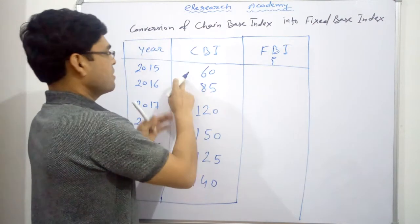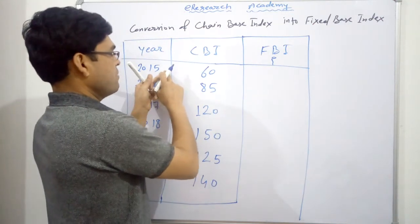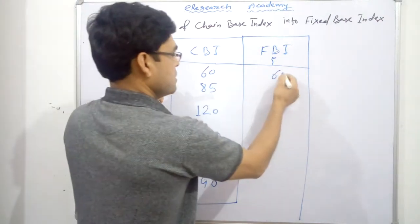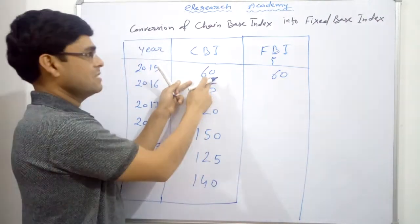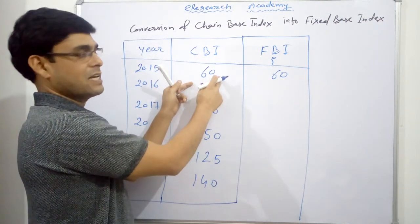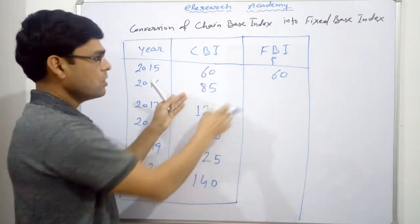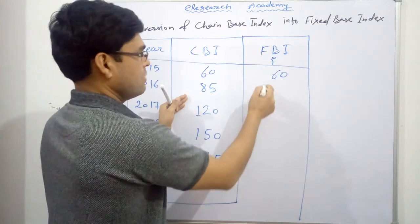So what we do for the base here, from where we are starting this problem or this solution, this will remain same as CBI, chain base index. Whatever the chain base index is, this will remain same. For next year, what will happen?